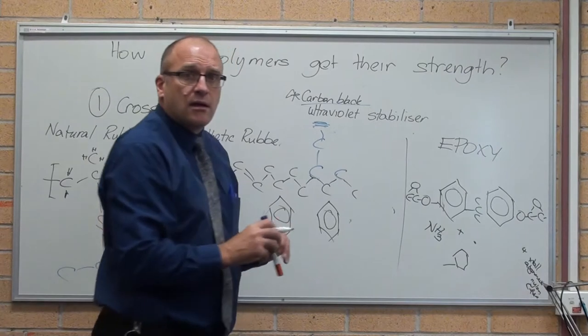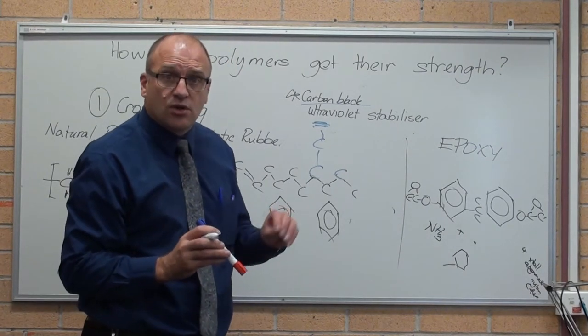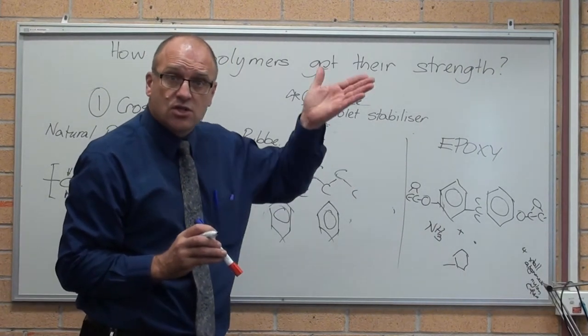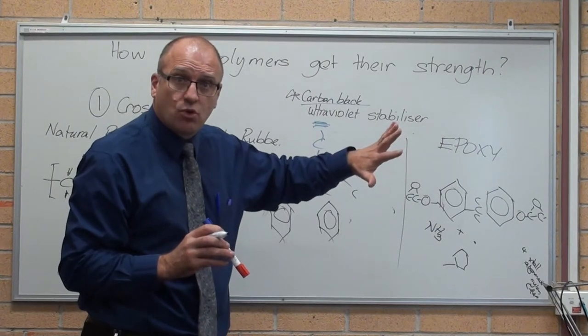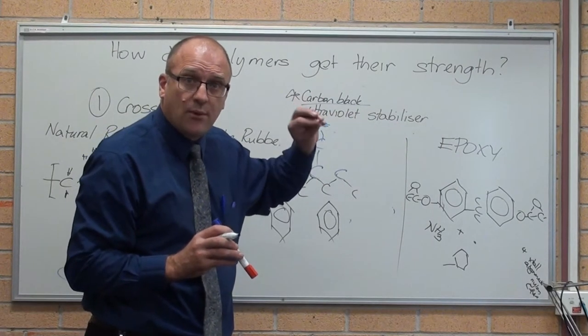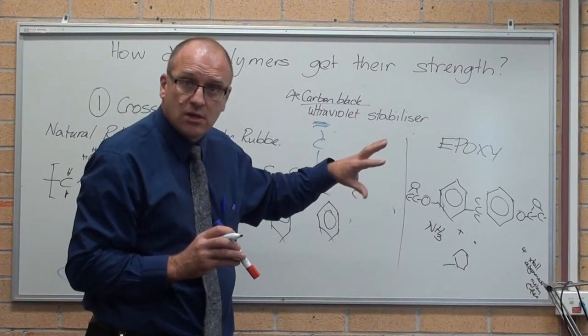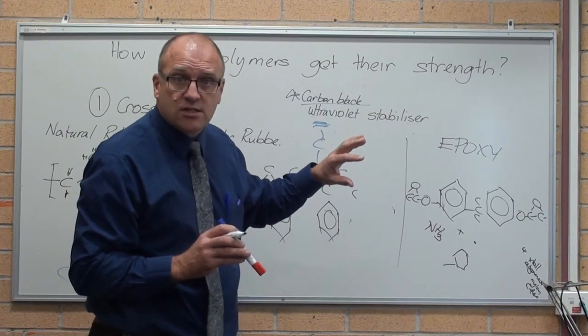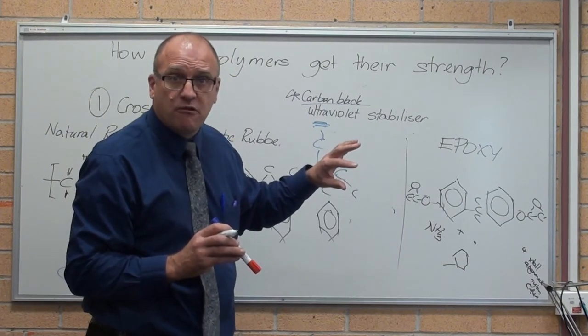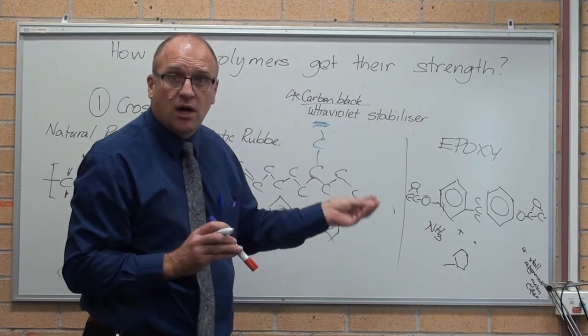Carbon black is just exactly that. It's soot. They add that to tyres to stop the light from going into the natural rubber, or stop the light from going in and destroying the double bonds. It's an ultraviolet stabiliser, incredibly critical. That's why your tyres are black.